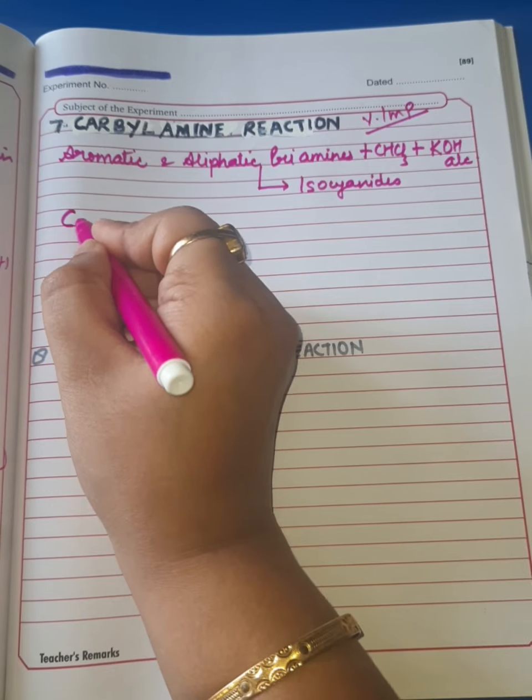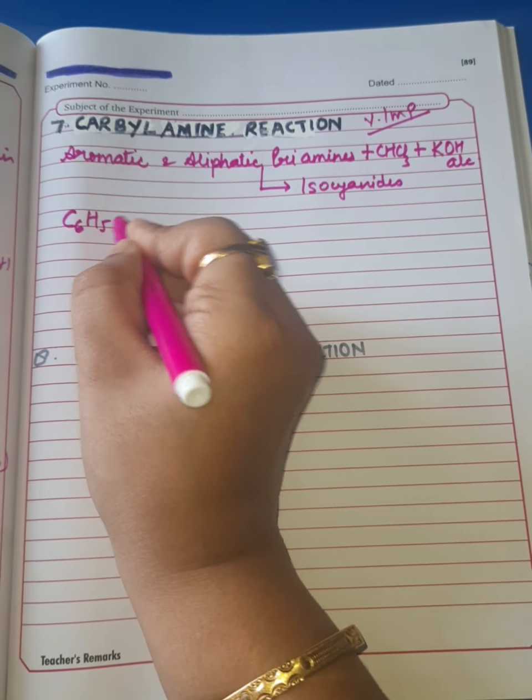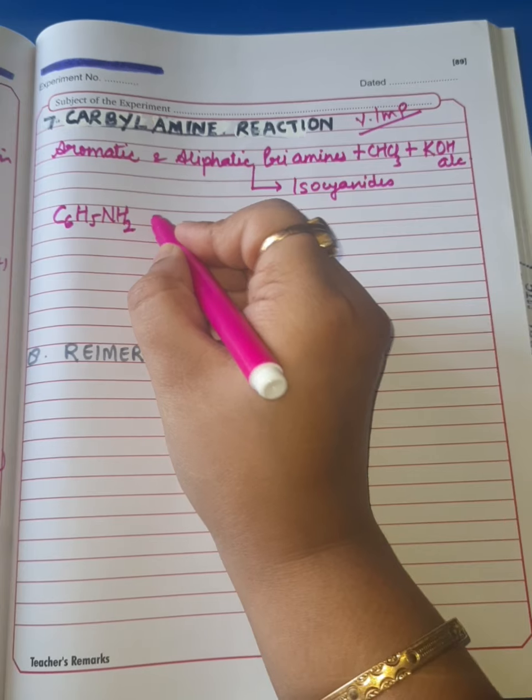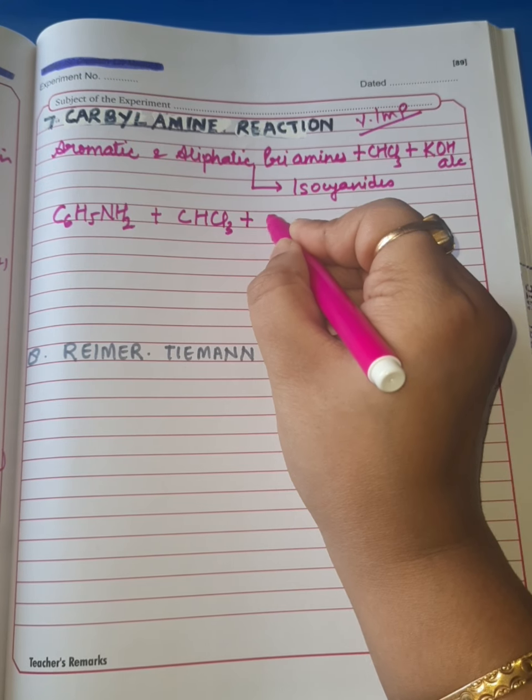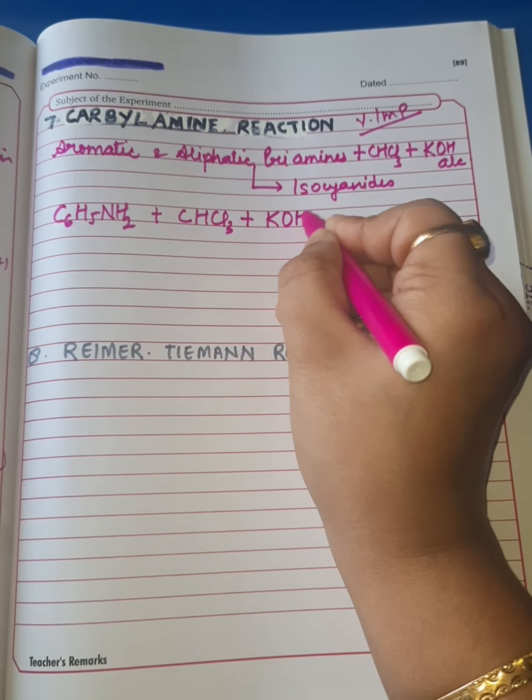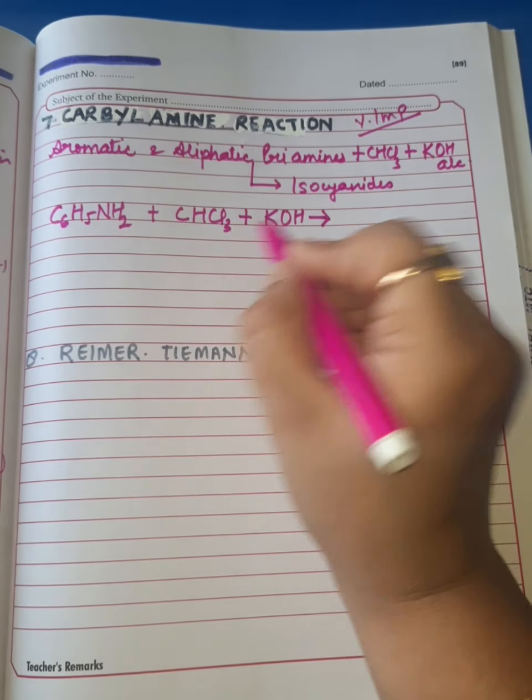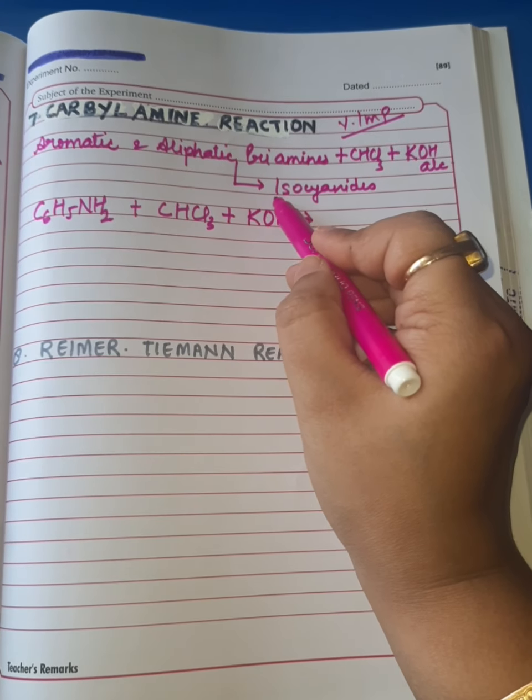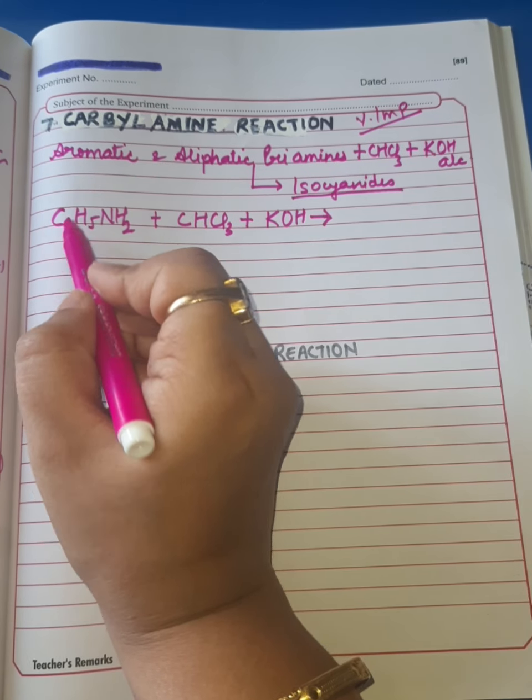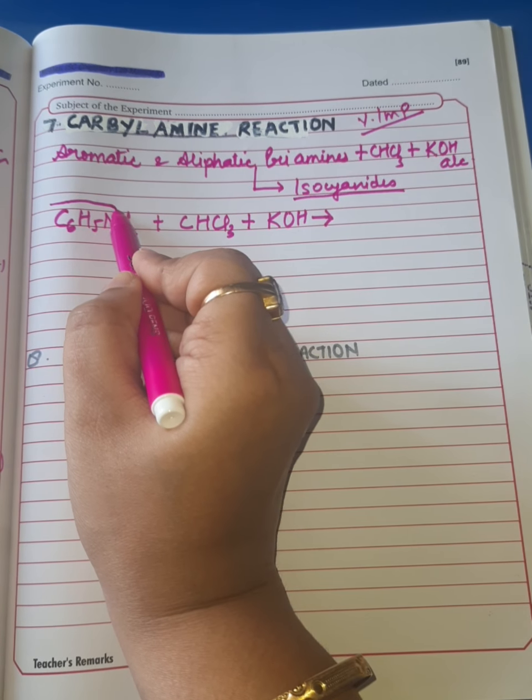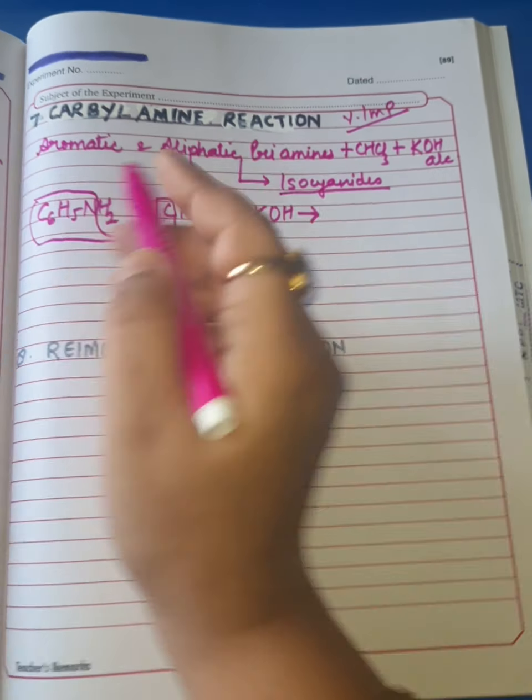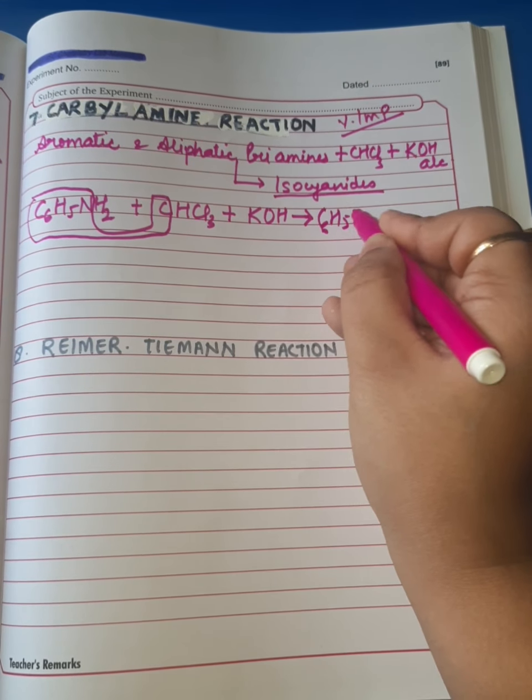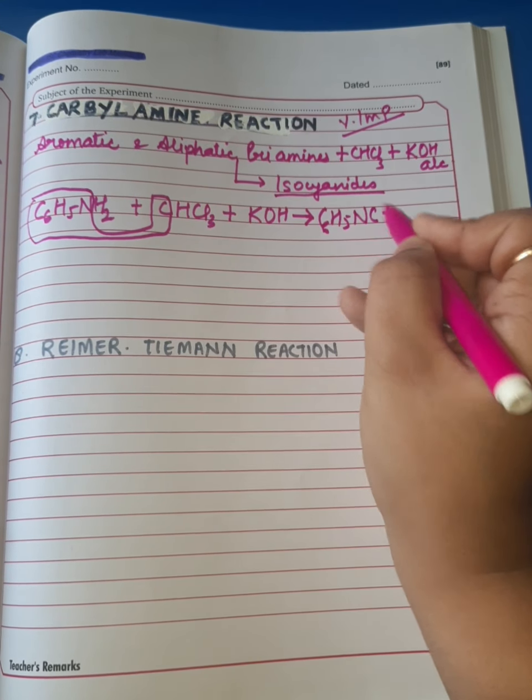Let us understand this reaction with an example of aromatic primary amine, C6H5NH2. When it reacts with chloroform CHCl3 in the presence of alcoholic KOH, we have to make the main product isocyanide. So C6H5N and C, this is phenyl isocyanide obtained as the major product.